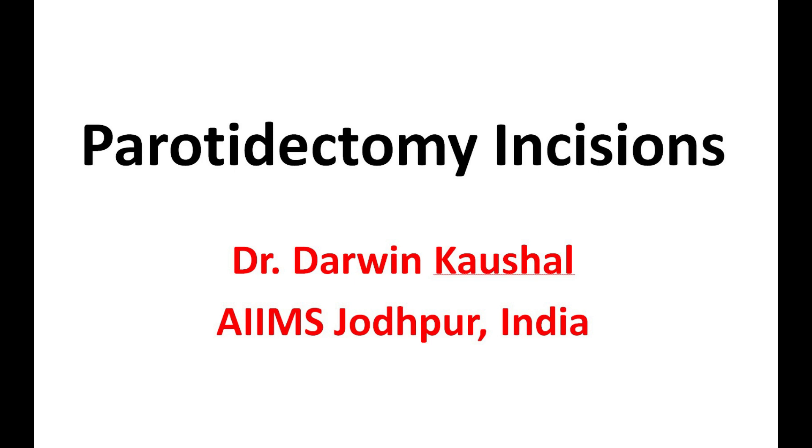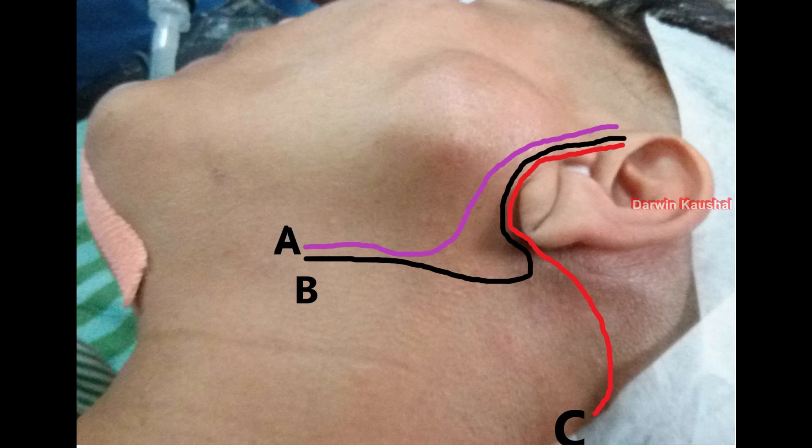This surgery is very common. If you see this picture, we have Type A which is the lazy S incision, Type B which is the most commonly used incision — the modified Blair's — and Type C which is the modified facelift, hairline, or rhytidectomy incision.